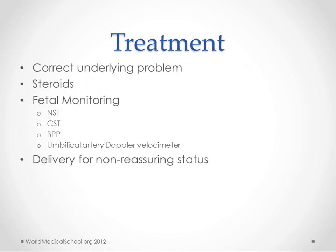Steroids are also used for fetal lung maturity in anticipation of premature delivery. Fetal monitoring tools — like the non-stress test, the CST, the biophysical profile, and umbilical artery Doppler velocimetry — can help us get an idea of how well the fetus is doing. If those are not reassuring, then we will deliver the baby early.